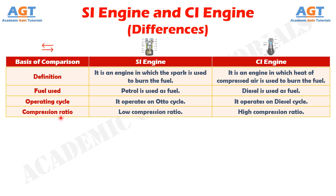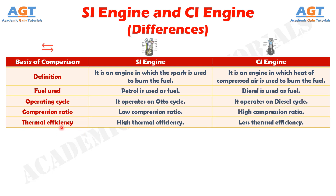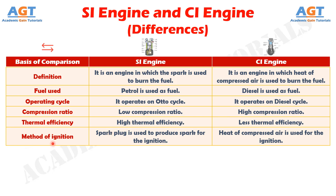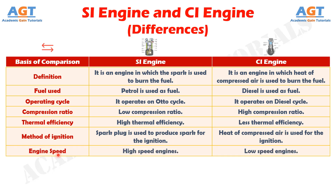In terms of compression ratio, the SI engine has a low compression ratio whereas the CI engine has a high compression ratio. In terms of thermal efficiency, the SI engine has high thermal efficiency whereas the CI engine has less thermal efficiency. In terms of method of ignition, in SI engine a spark plug is used to produce spark, whereas in CI engine heat of compressed air is used for ignition. In terms of engine speed, SI engines are high-speed engines whereas CI engines are low-speed engines.